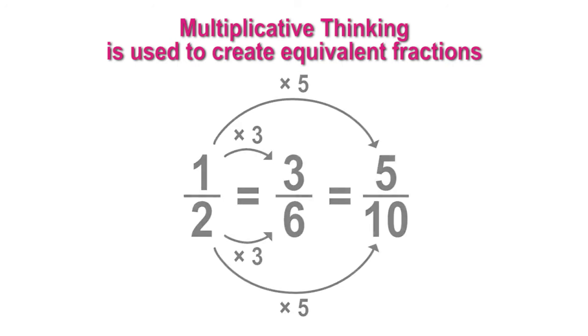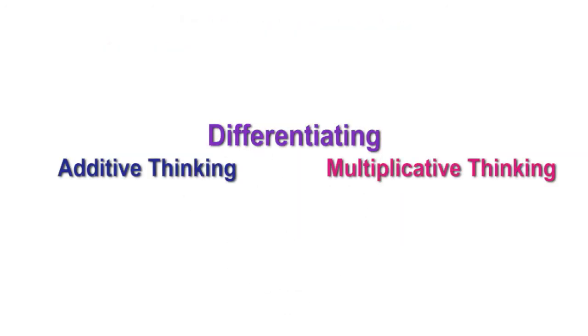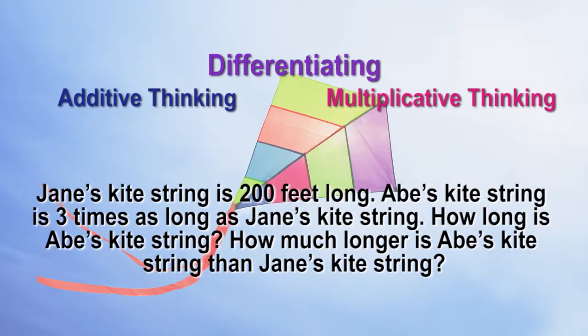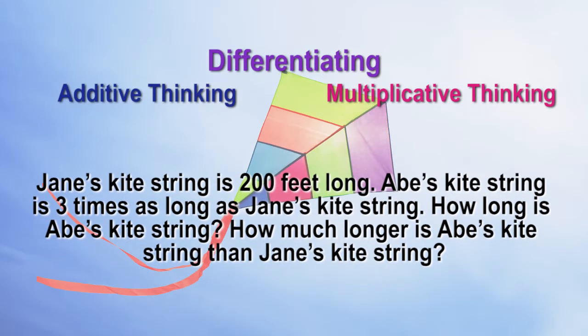Students need to be able to differentiate between additive and multiplicative thinking. Let's look at the following situation. Jane's kite string is 200 feet long. Abe's kite string is 3 times as long as Jane's kite string. How long is Abe's kite string? How much longer is Abe's kite string than Jane's kite string?